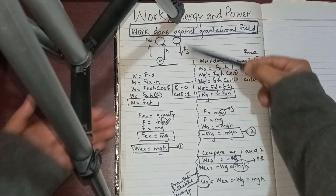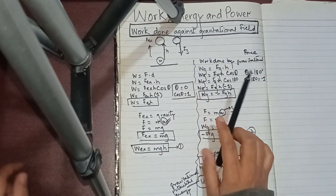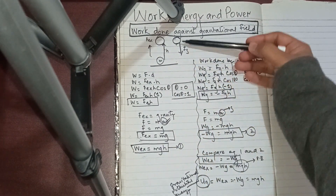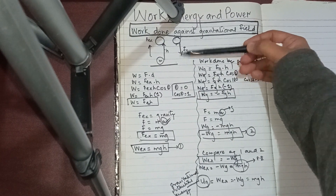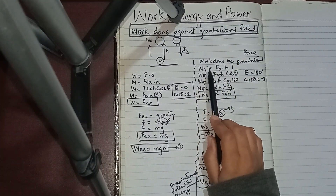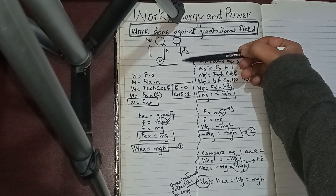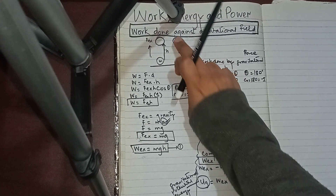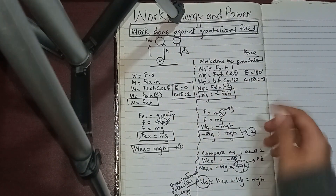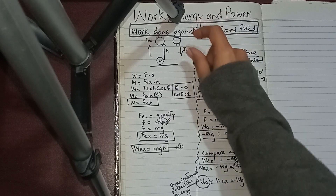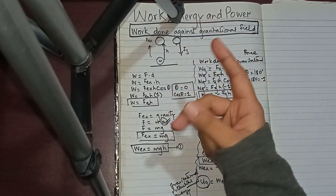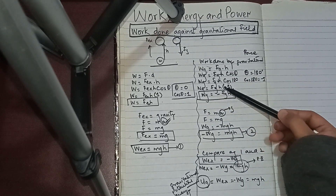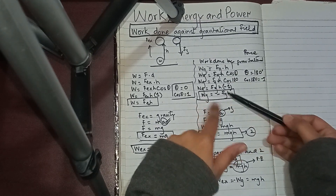Next, we found the work done by the gravitational force. The force of gravity acts downward while the displacement is upward, making them antiparallel — the angle between them is 180°. Using W = F × d × cos(θ), and substituting F = mg: work done by gravity = mg × h × cos(180°) = −mgh. This is Equation 2.